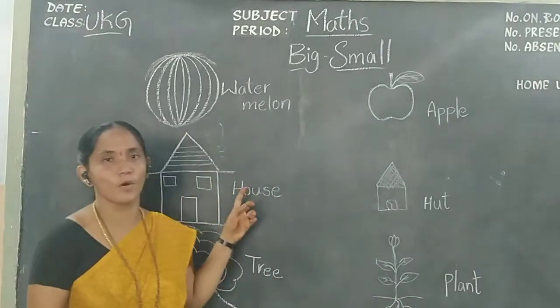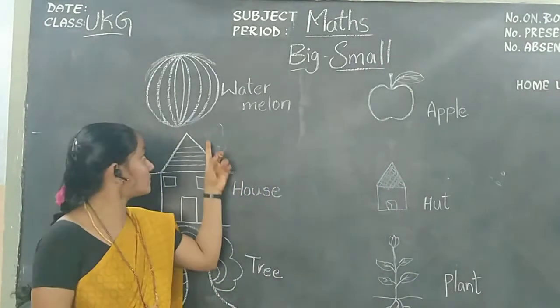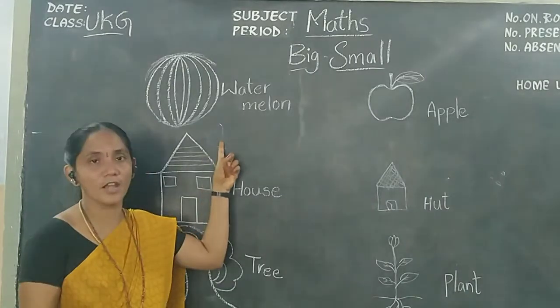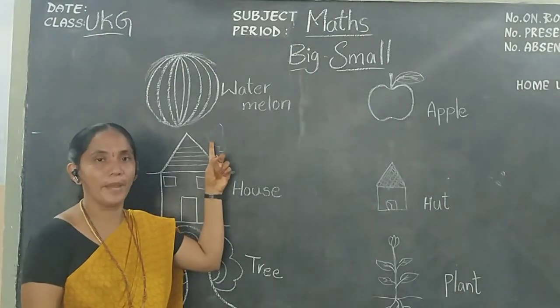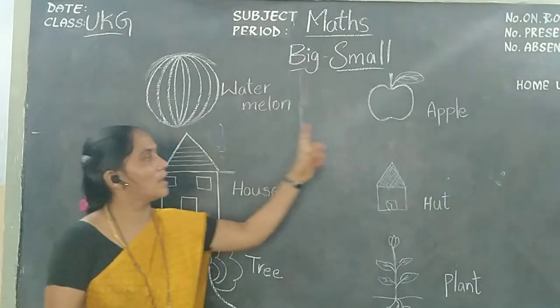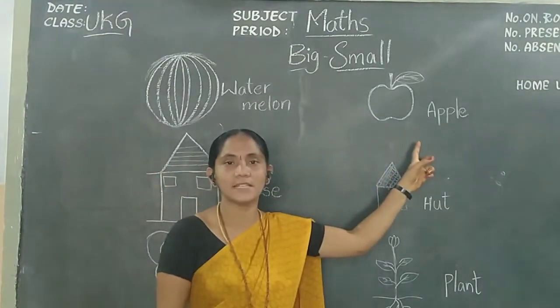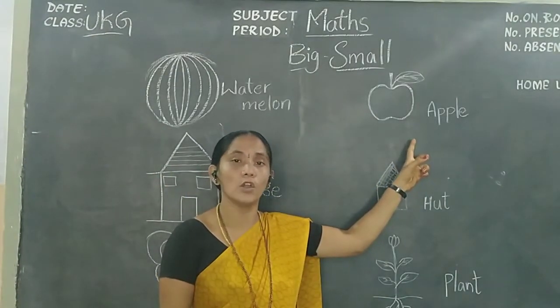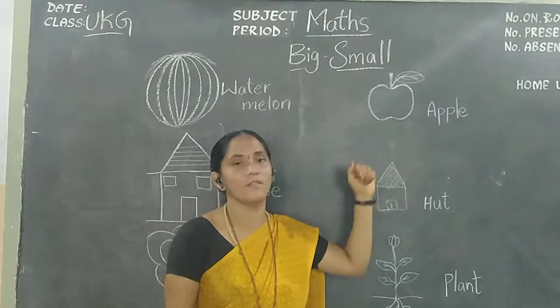Look at the board. Watermelon is big, and apple is? It looks like a small one.